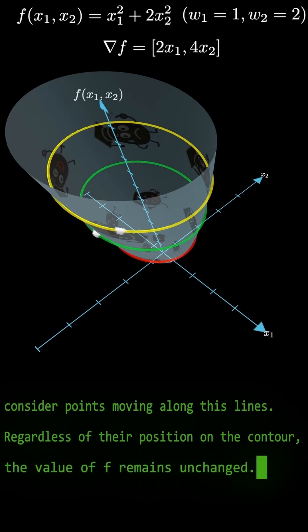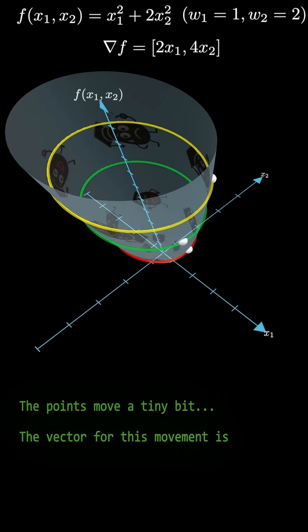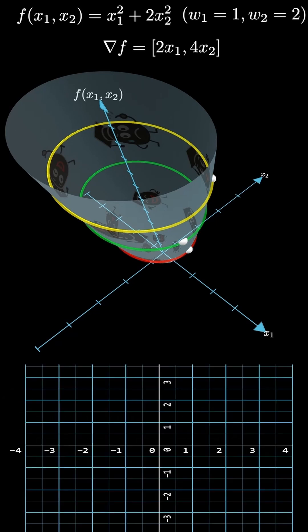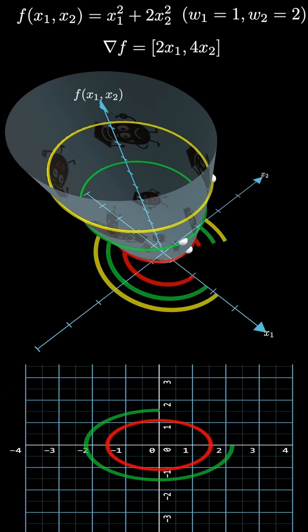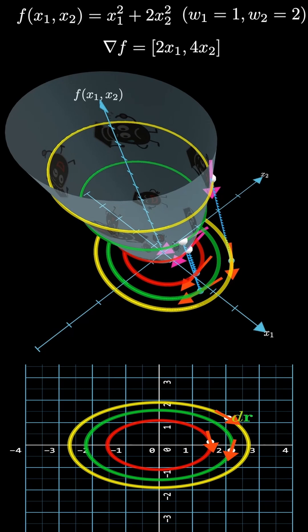Watch the point slide slowly along the line. We'll look at a very small movement along the contour — think infinitely small, just a tiny step. That small movement is tangent to the contour line. We call that tangent small movement vector dr. dr equals (dx1, dx2).